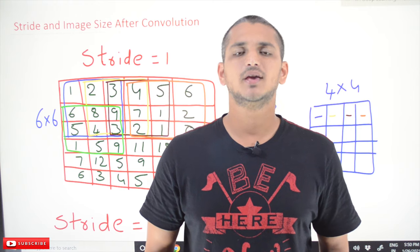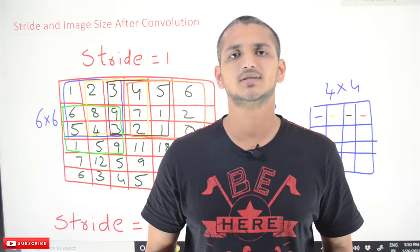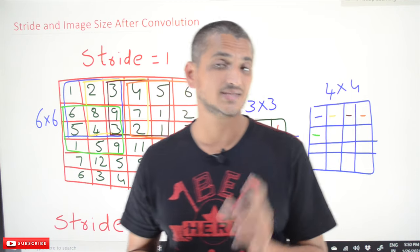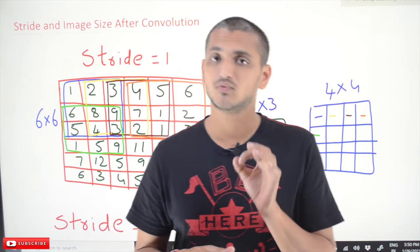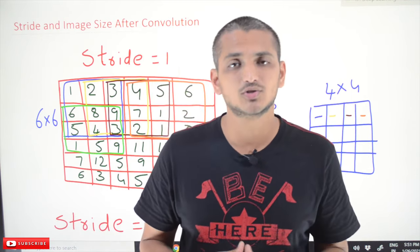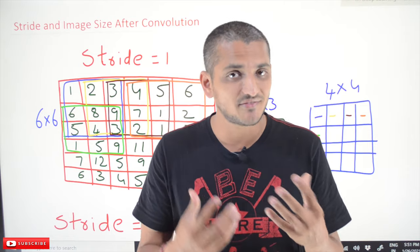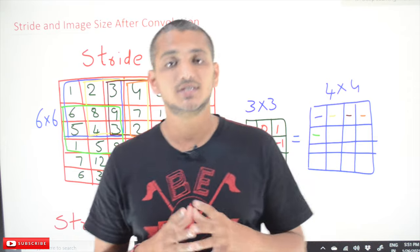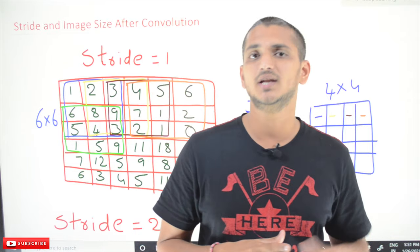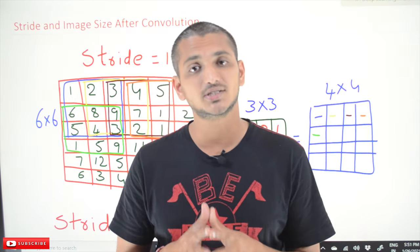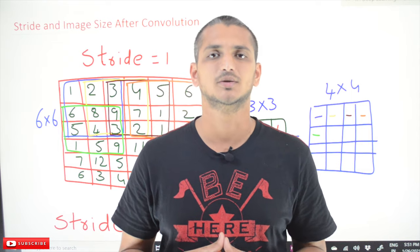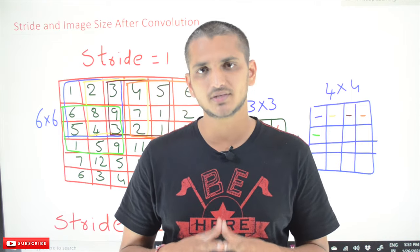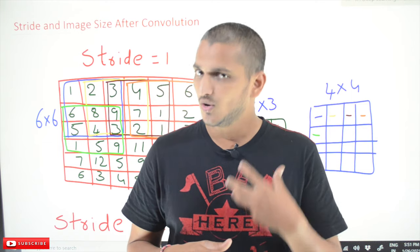Hi, welcome to Learning Monkey. I am Raghavir. In this class we will discuss about stride and image size after convolution. In our previous classes we clearly discussed convolution operation and how it helps in identifying features in an image. This is a continuation class — please follow our playlist from the beginning for a better understanding of the complete deep learning concepts. The link for the playlist is provided in the description below.